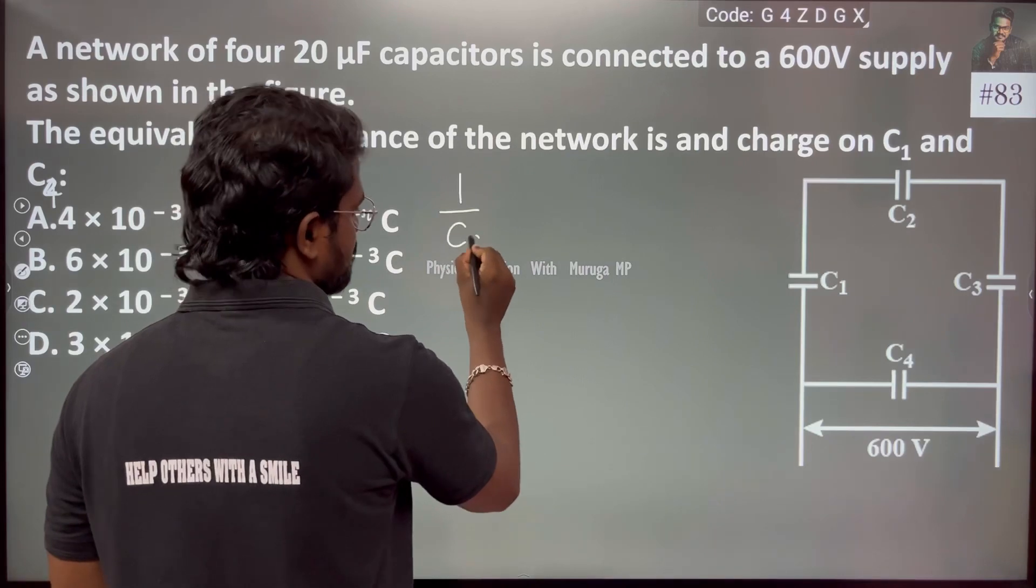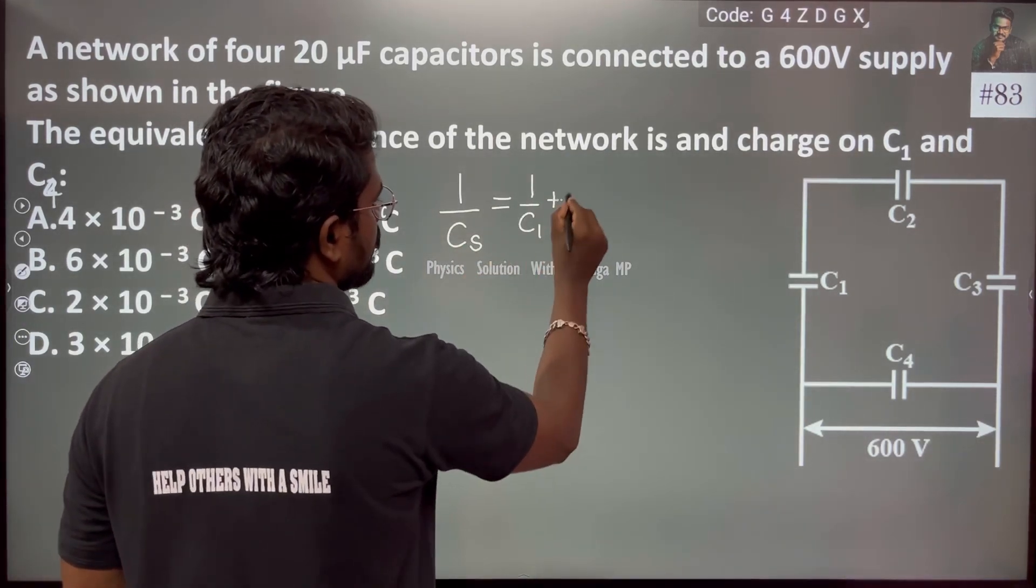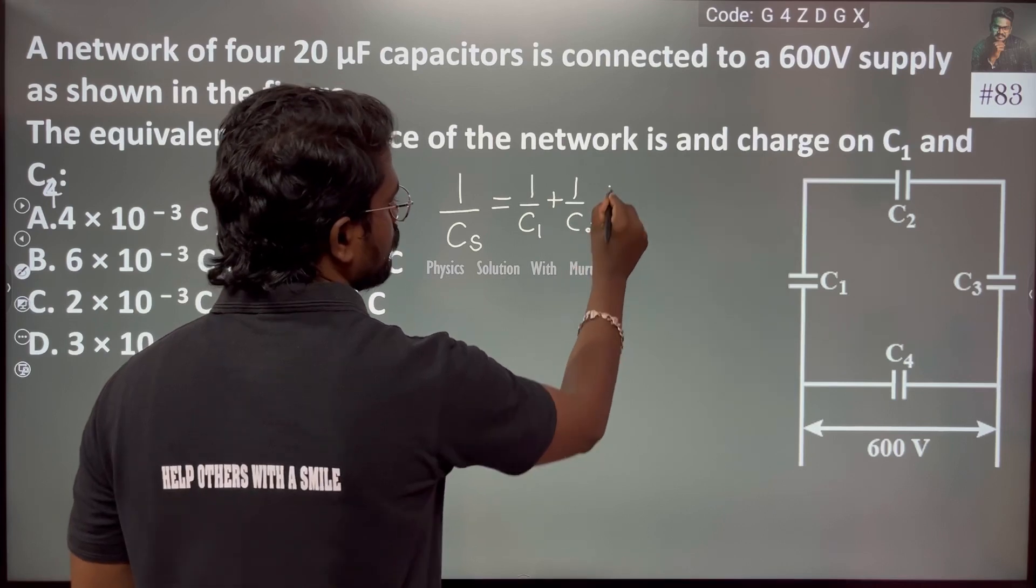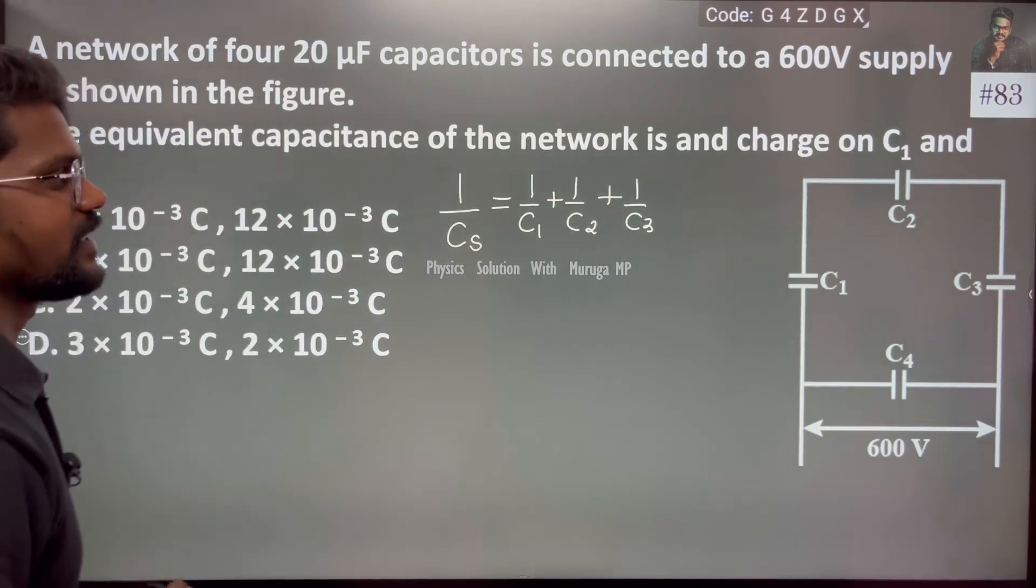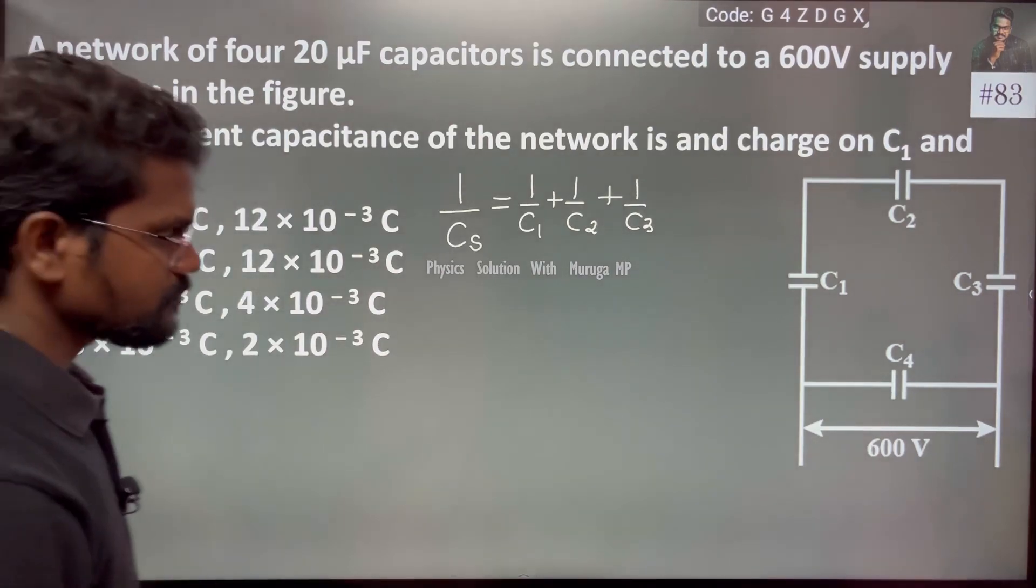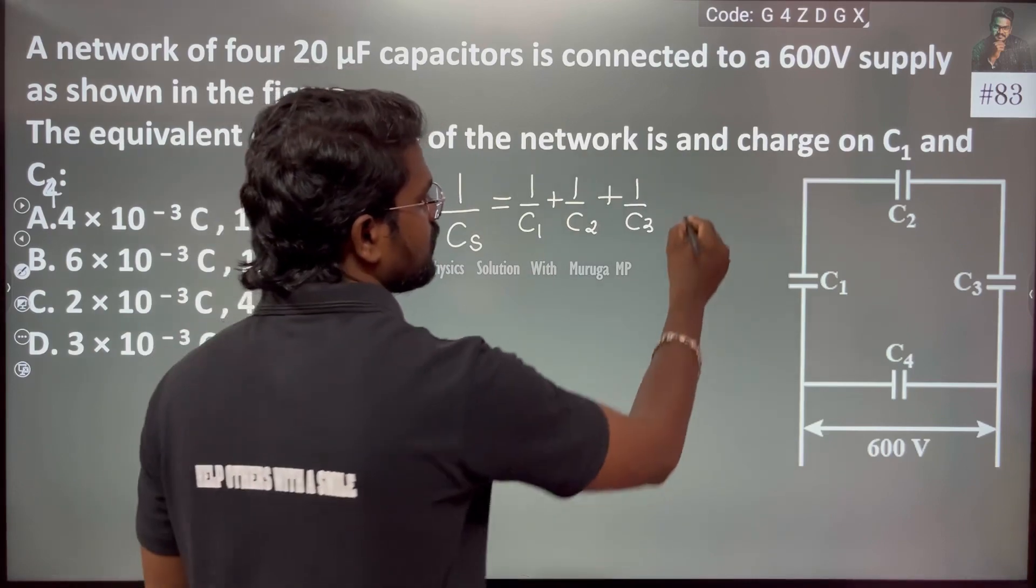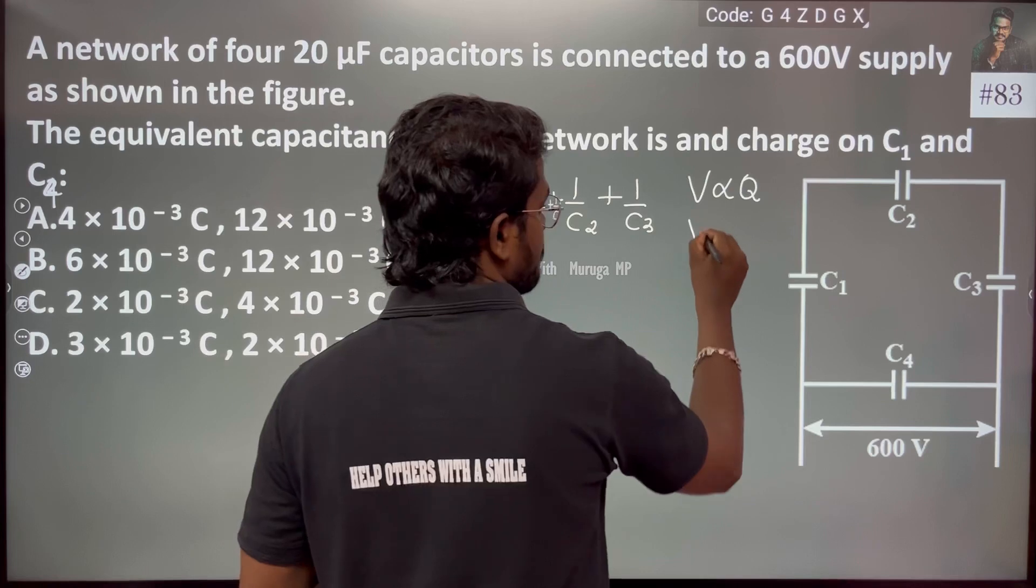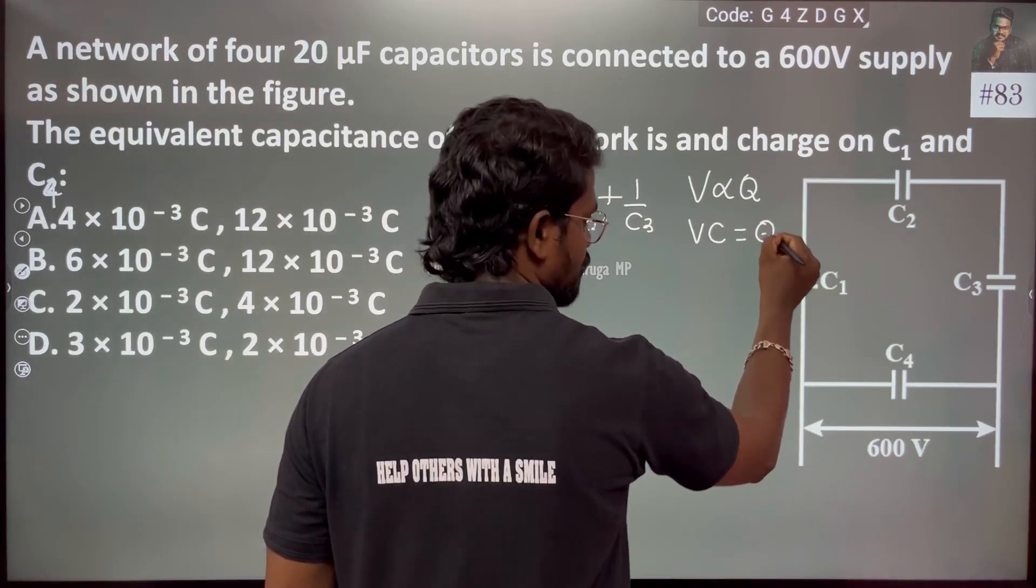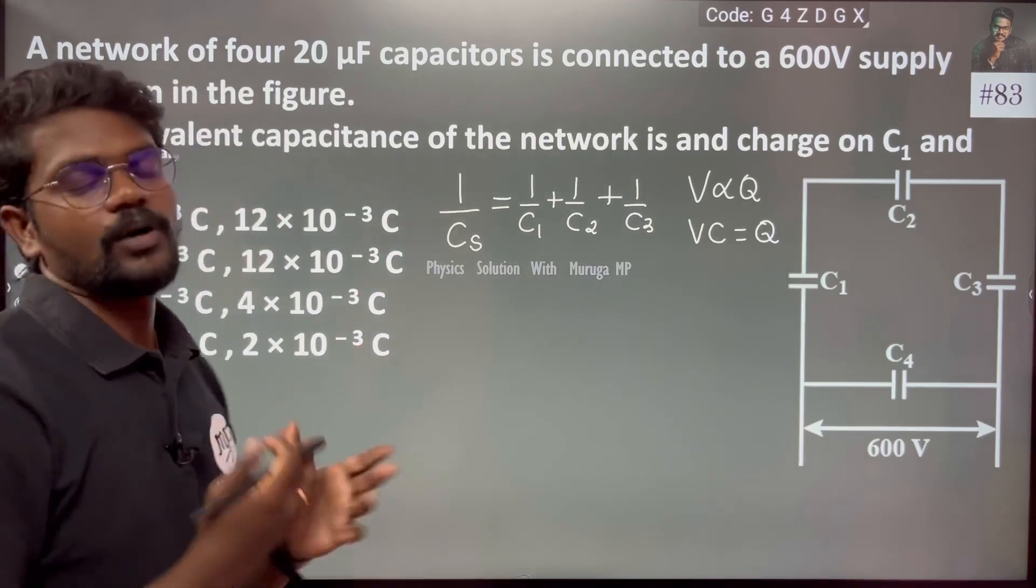So, one by Cs, which is equal to one by C1 plus one by C2 plus one by C3. We see which is equal to q1. So Vc which is equal to q by c.